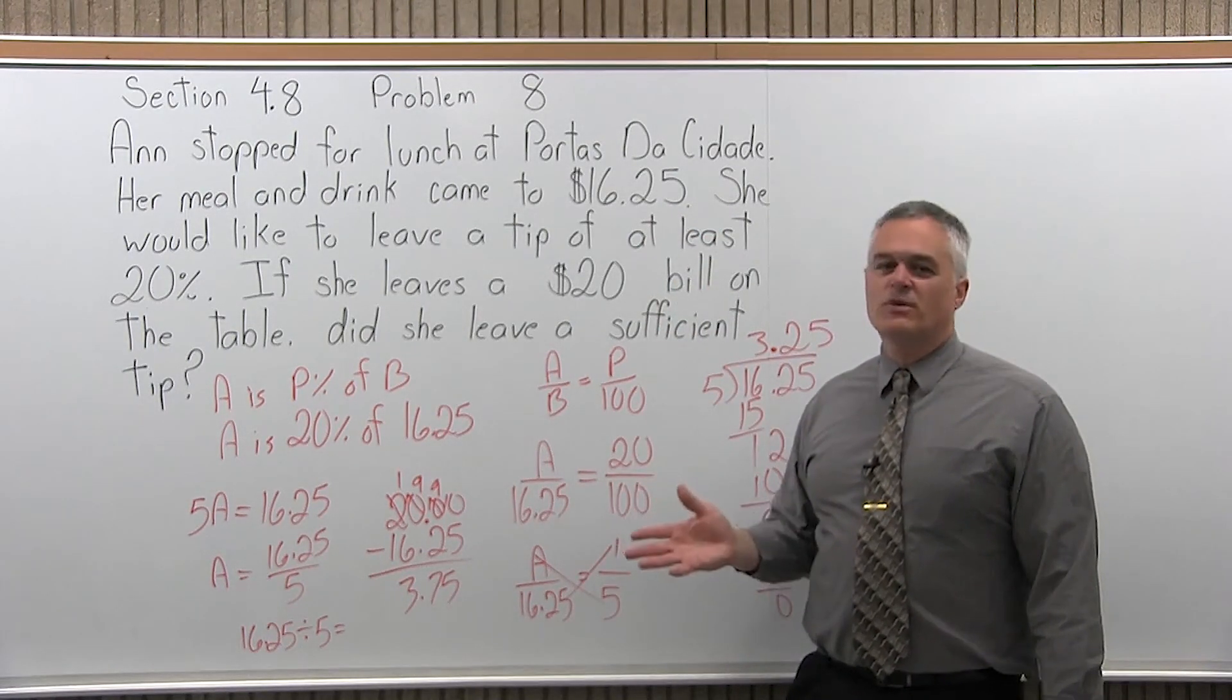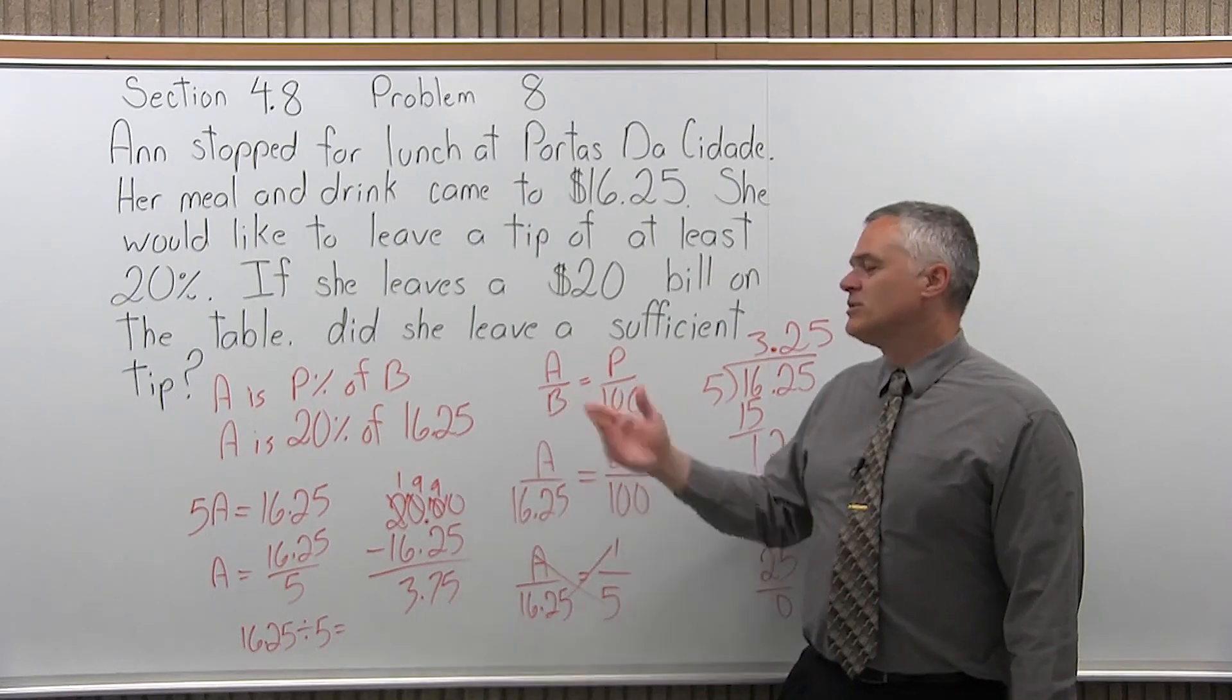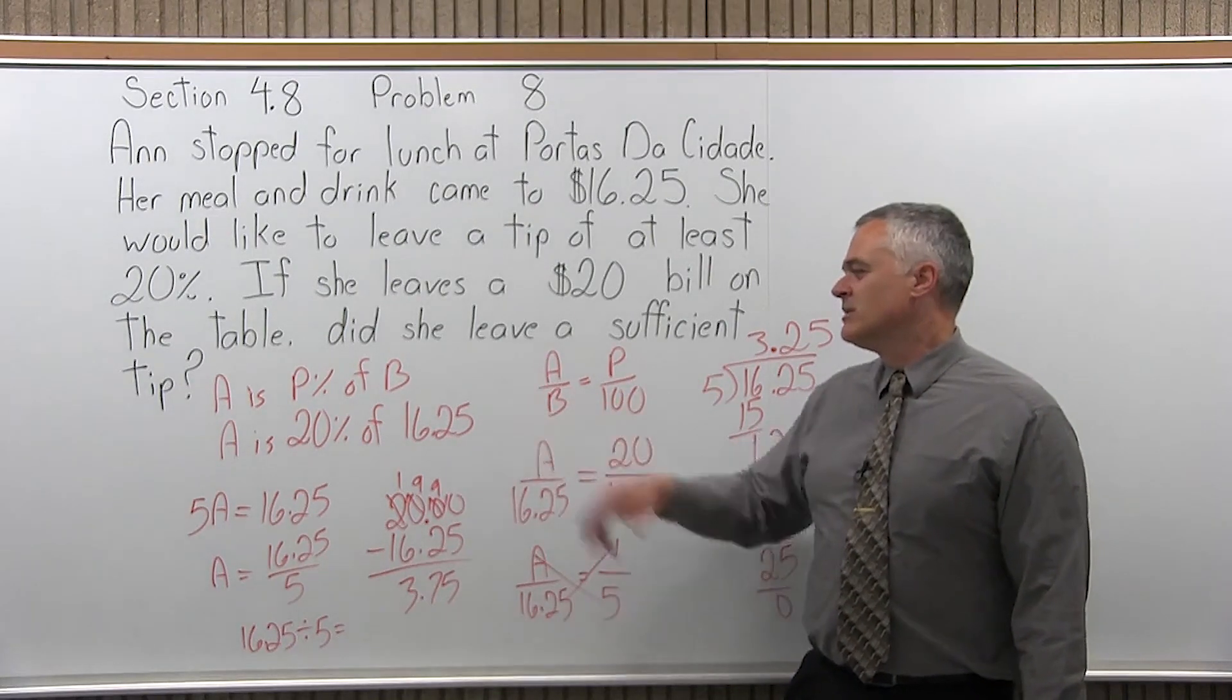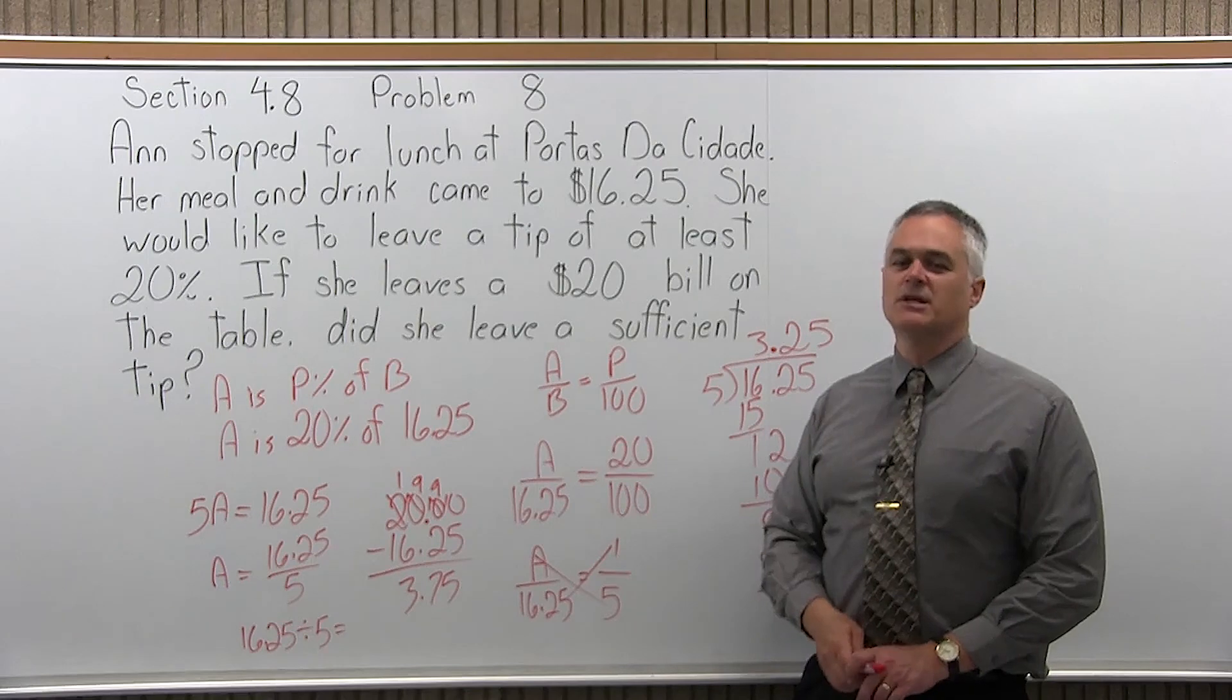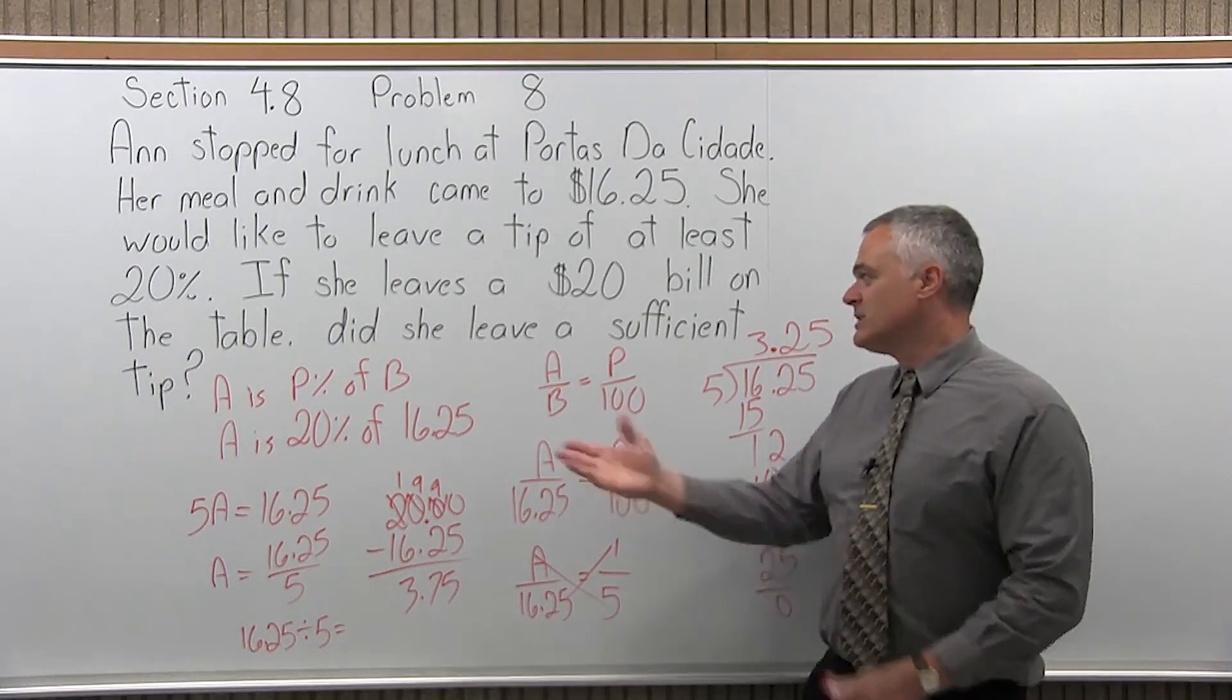So, if you're at a restaurant, you know you want to leave 20%, $3.26 is pretty close without doing all this work. Same answer. So, anyway, the answer is yes, Ann left a sufficient tip.